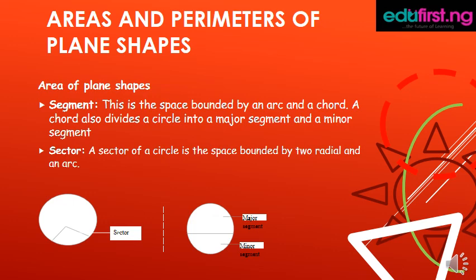Areas and perimeter of plane shapes. Area of plane shapes. Segment. This is the space bounded by an arc and a chord. A chord also divides a circle into a major segment and a minor segment.